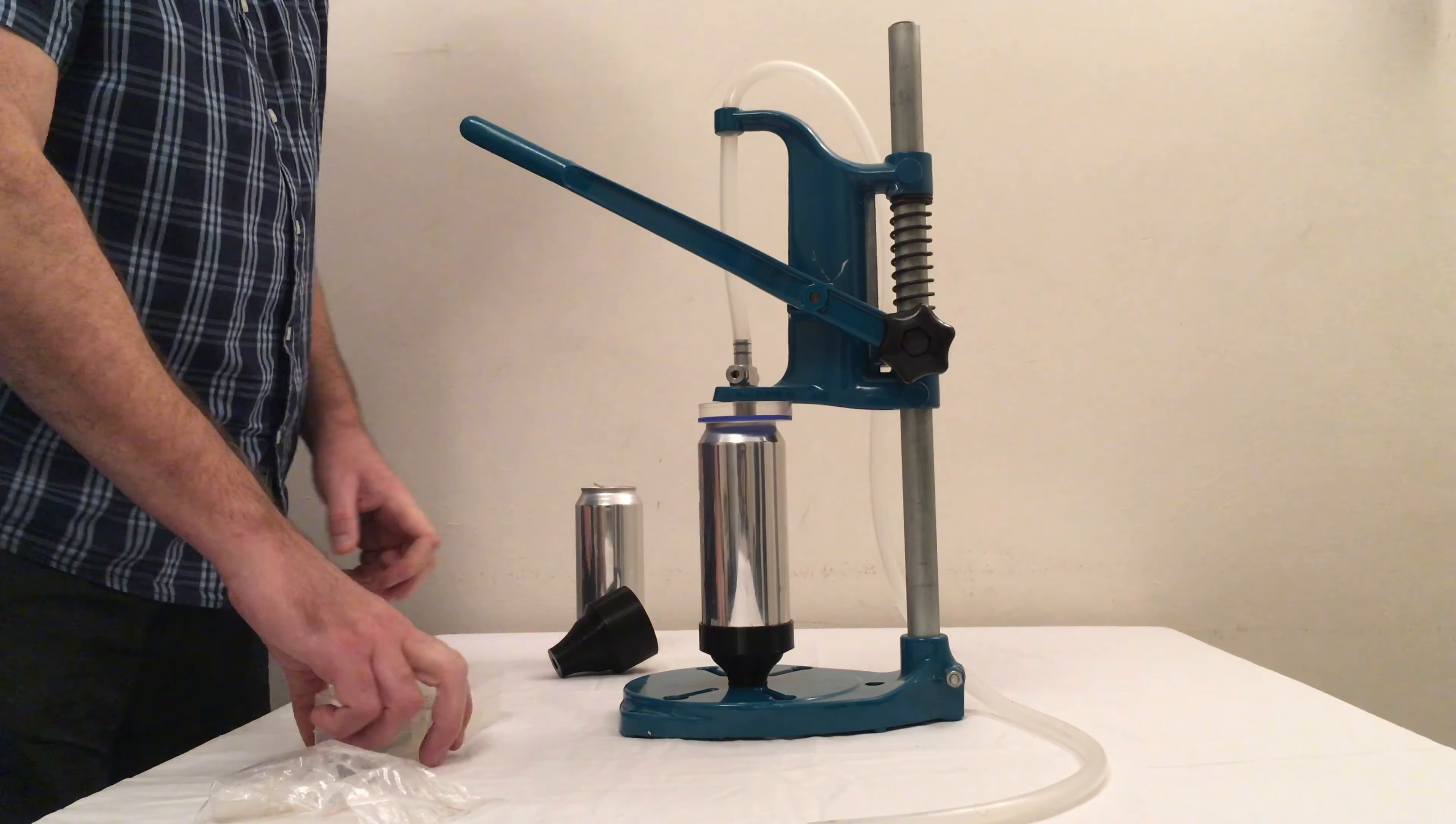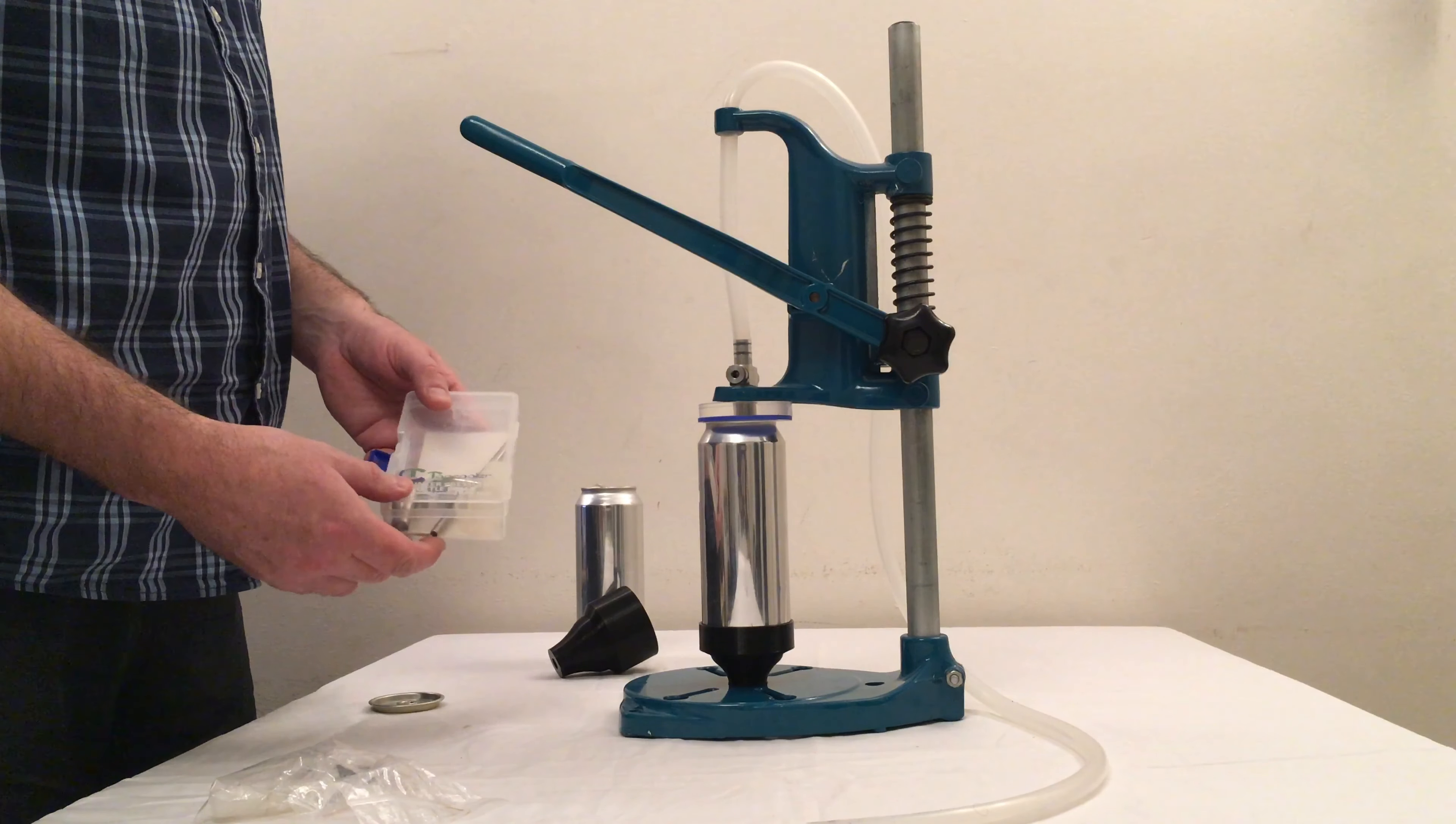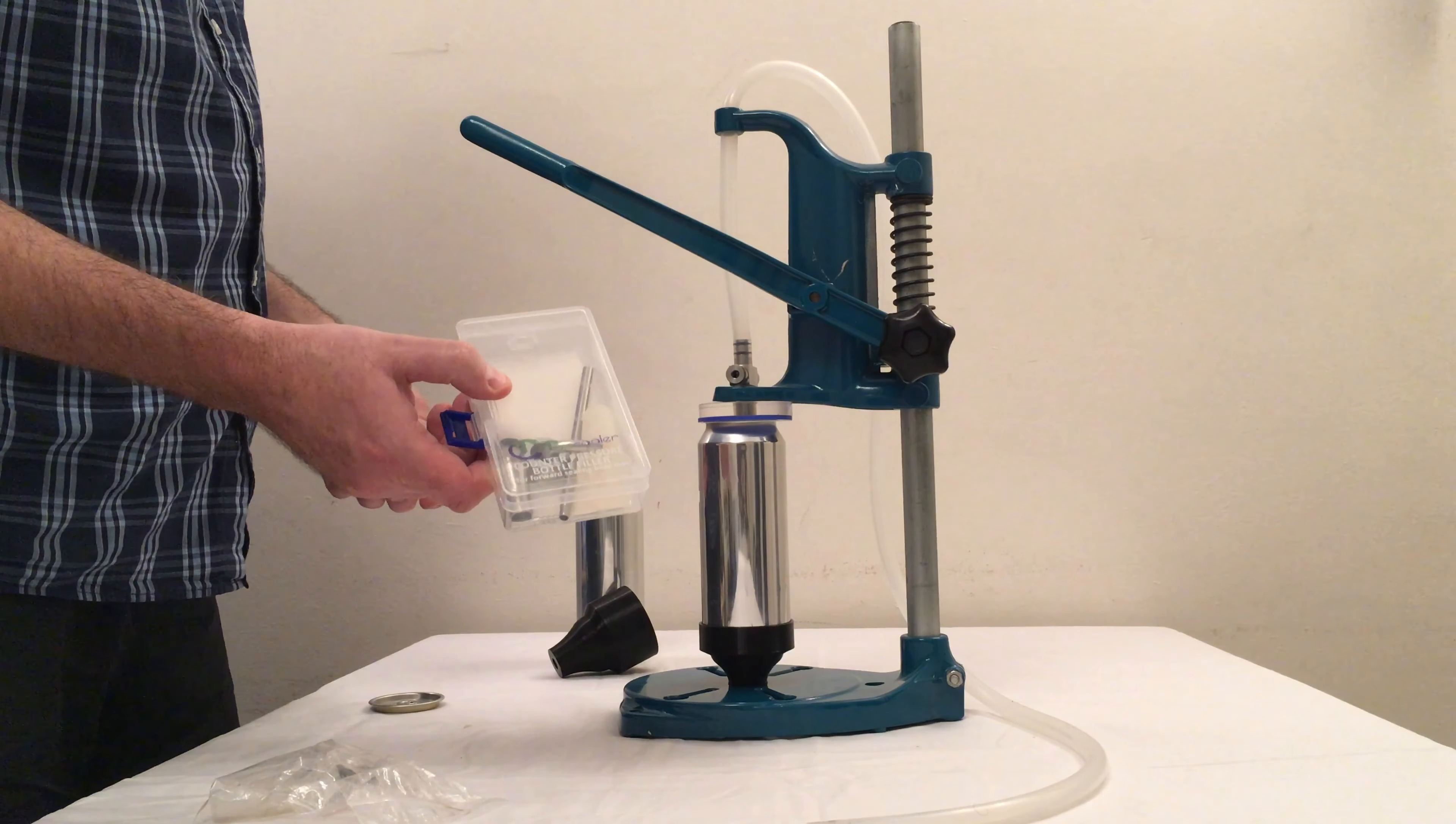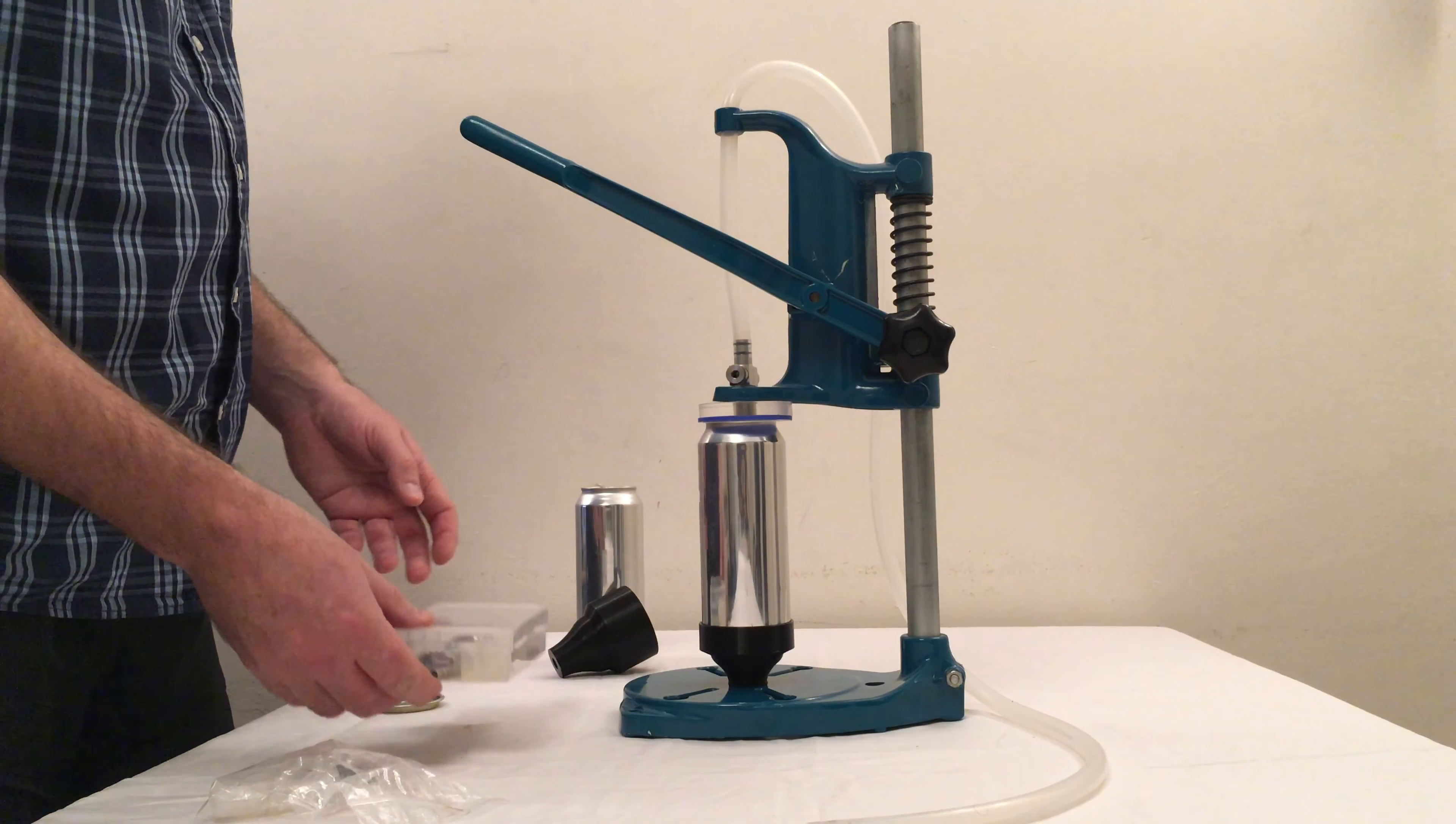First of all, I've got a tap cooler counter pressure bottle filler, which I've had for some time. I've used the Pecas ones before, but I prefer this one because it will fit directly onto the end of the tap. And it's all stainless steel and you can sterilise it quite easily.